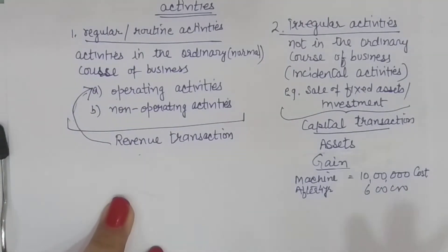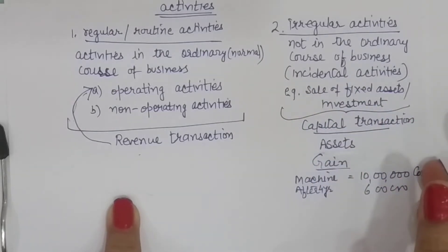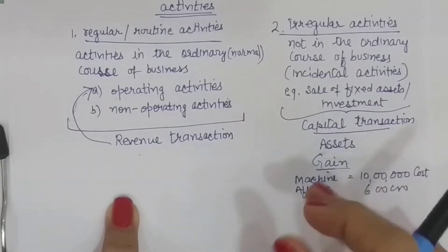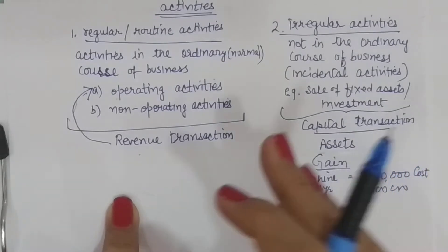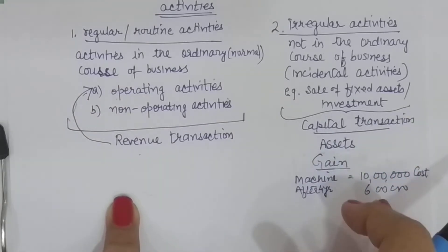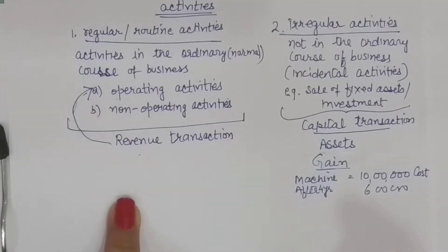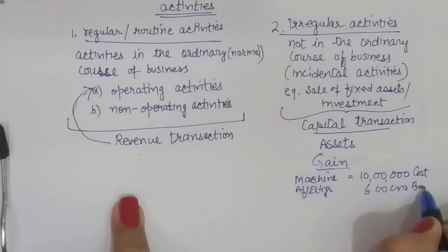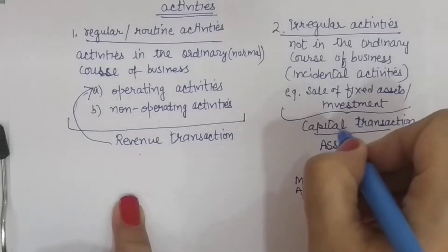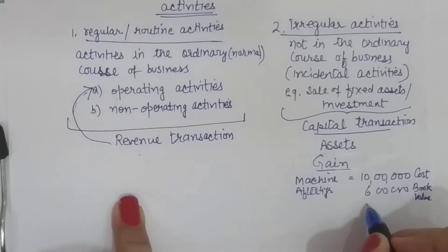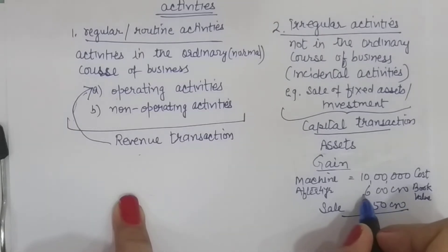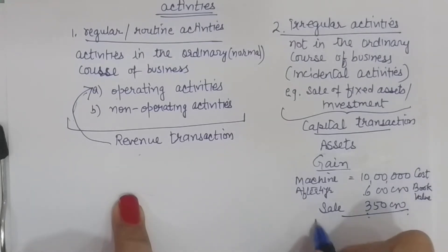So four years ho gayi. Ab yeh machine ab bhi kaam ki hai, iski life 10 saal thi, yeh use ho sakti hai. But ek nai machine market mein aa gayi hai — innovation hua. Nai machine ki wajah se agar woh nai machine use karo to production jaldi hogi, efficiency badh gayi, time save ho raha hai, production cost kam ho rahi hai. So main is machine ko kyun chalaaun? Main isse beche dungi and I will replace it with a new machine. But yeh ek extraordinary transaction hai — yeh routine mein aisa nahi hota. Books mein iski value hai six lakh. Suppose it was possible to sell it for three lakh fifty thousand. Hum nai isse sale kar diya three lakh fifty thousand pe. Cheez aapki six lakh ki hai, aap nai teen lakh fifty thousand mein sale kar diya — to aapko mila loss.